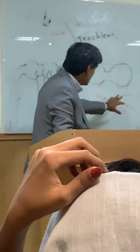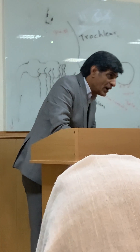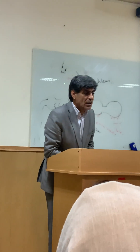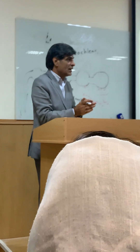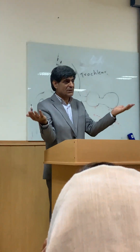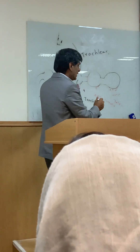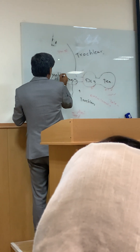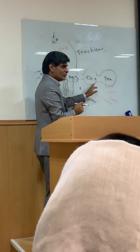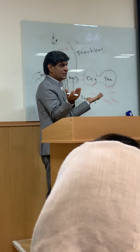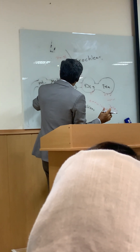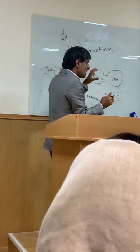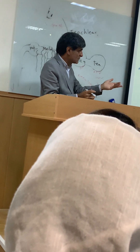Do you understand? Cranial nerves emerge from the face of the brain — anterior — except trochlear, which is posterior. Do you understand? Yeah, we don't understand. We don't understand.